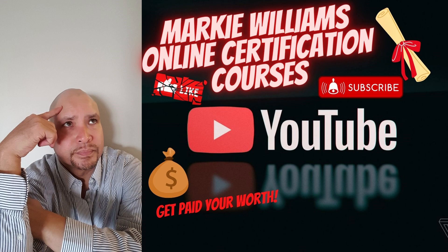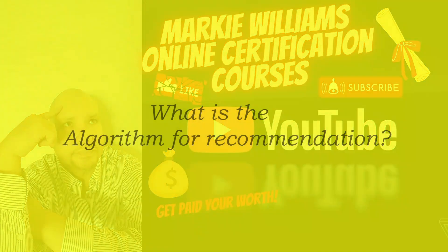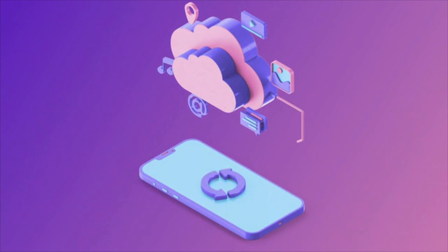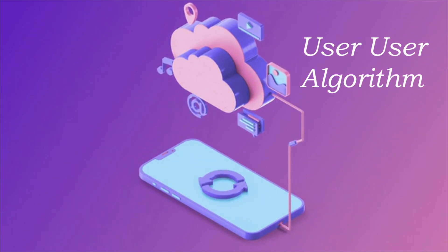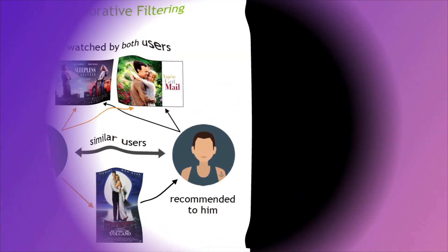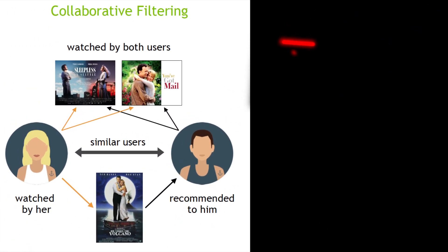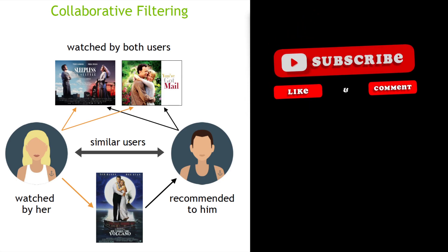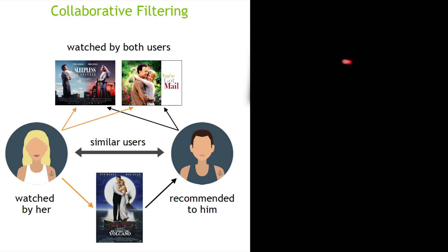Commonly called the user-user algorithm, this is when the recommendation algorithm follows the 'people like you' scenario. It recommends an item to a user if similar users liked that item before. The similarity between two users is computed from the amount of items they have in common in the data set.